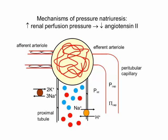Another effect of the decrease in angiotensin is downregulation of both luminal sodium-hydrogen antiporters and basolateral sodium-potassium ATPase in the proximal tubule, resulting in less sodium reabsorption and more excretion.